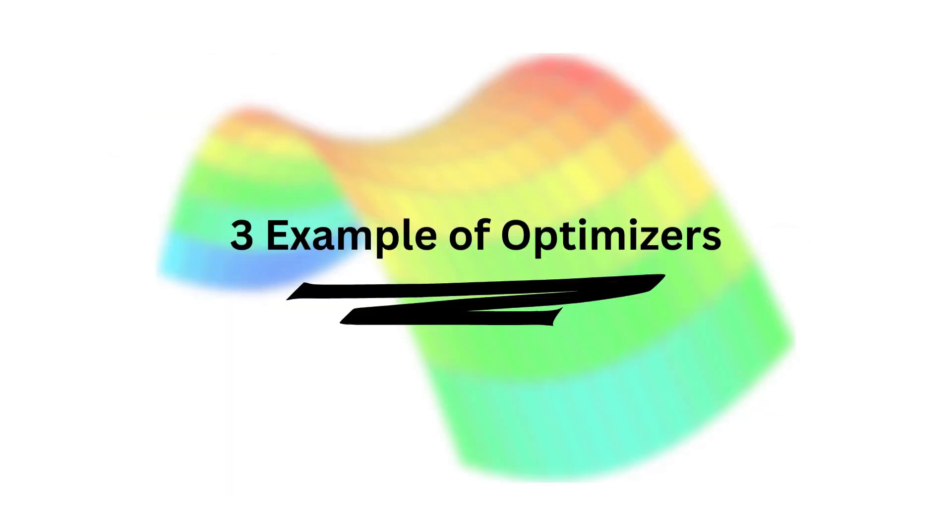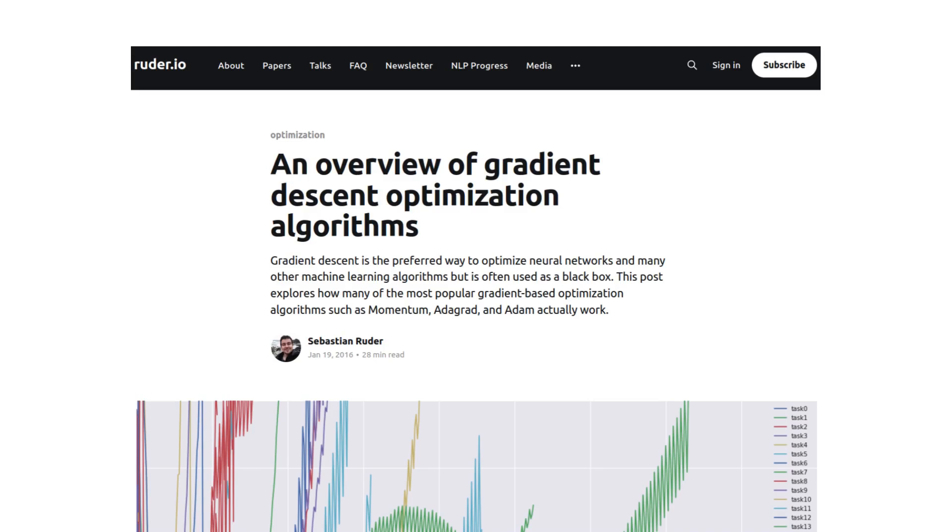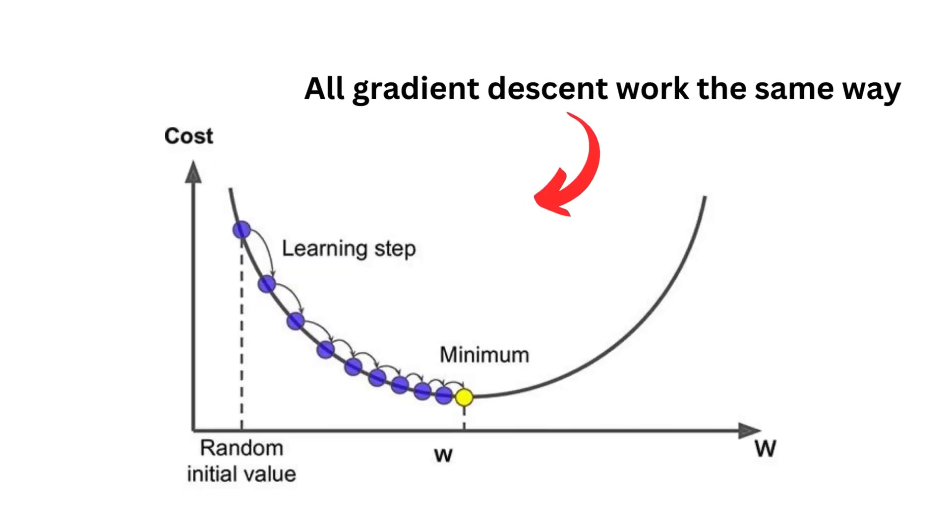Let's take a quick look at three flavors of optimizers based on gradient descent. By the way, I found two fantastic blog posts on gradient descent that are very, very complete. Check them out - they are in the description. All right, so gradient descent algorithms all work pretty much the same way.